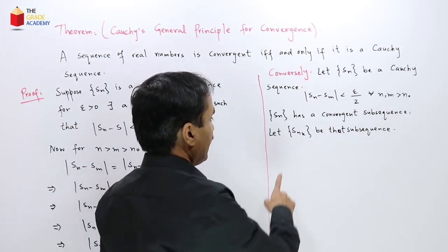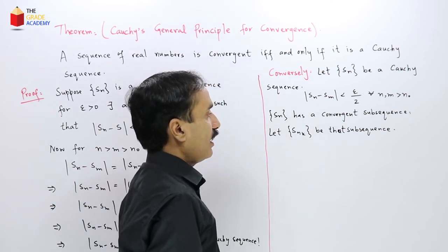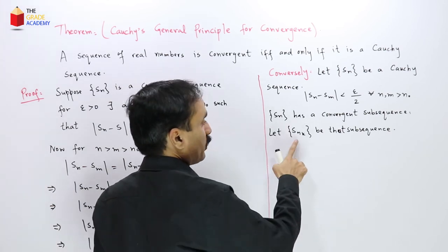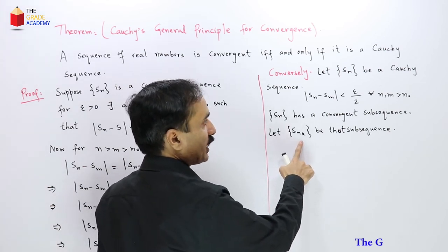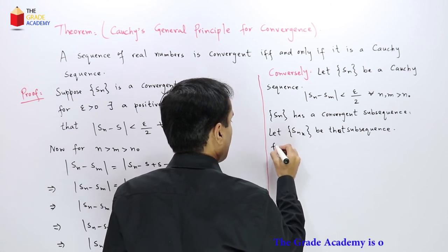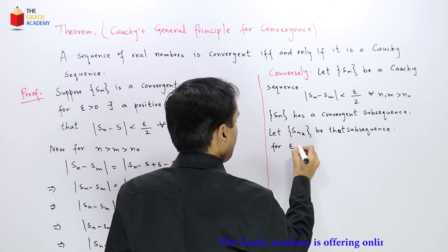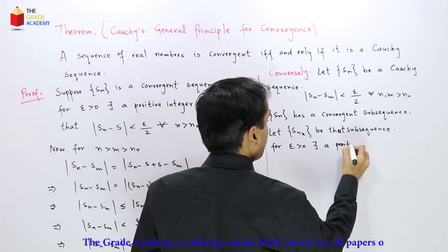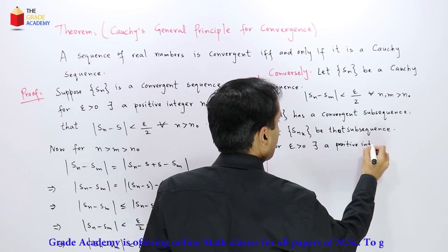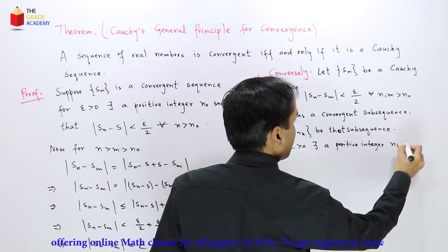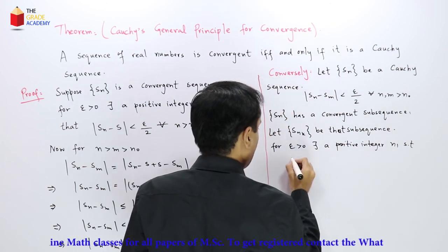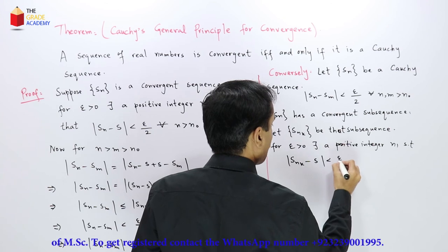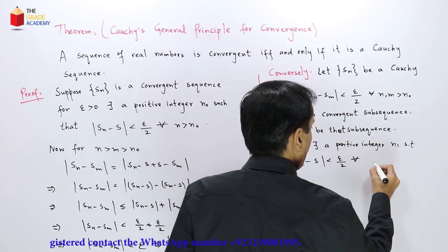Since Sn_k is a convergent subsequence, let it converge to some limit S. For positive epsilon, there exists a positive integer n1 such that |Sn_k - S| < ε/2 for all n_k greater than n1.